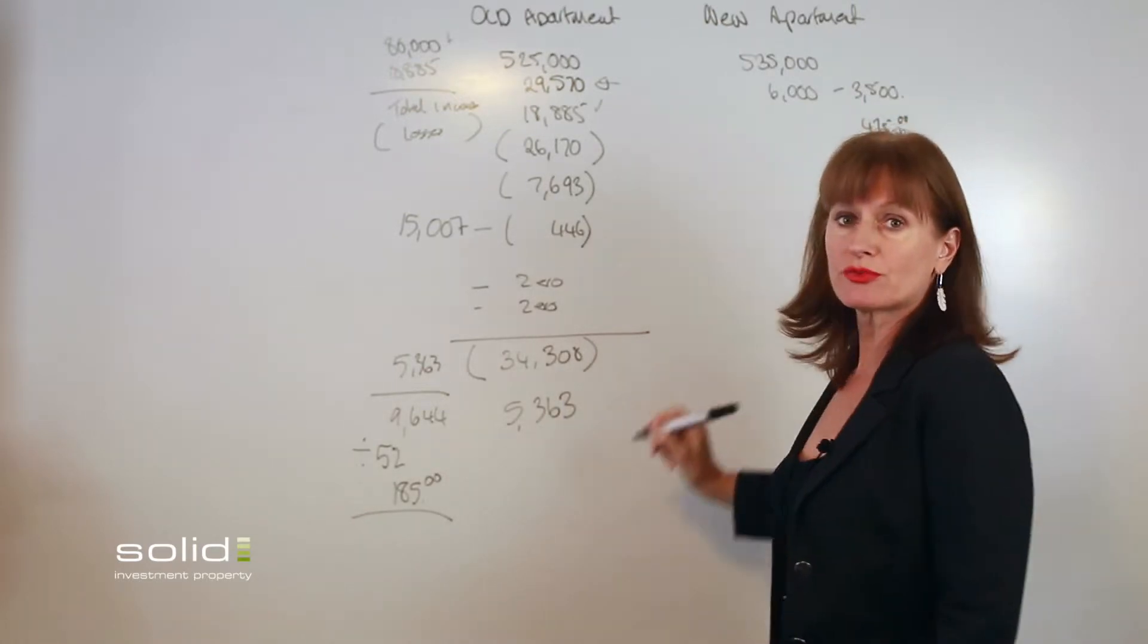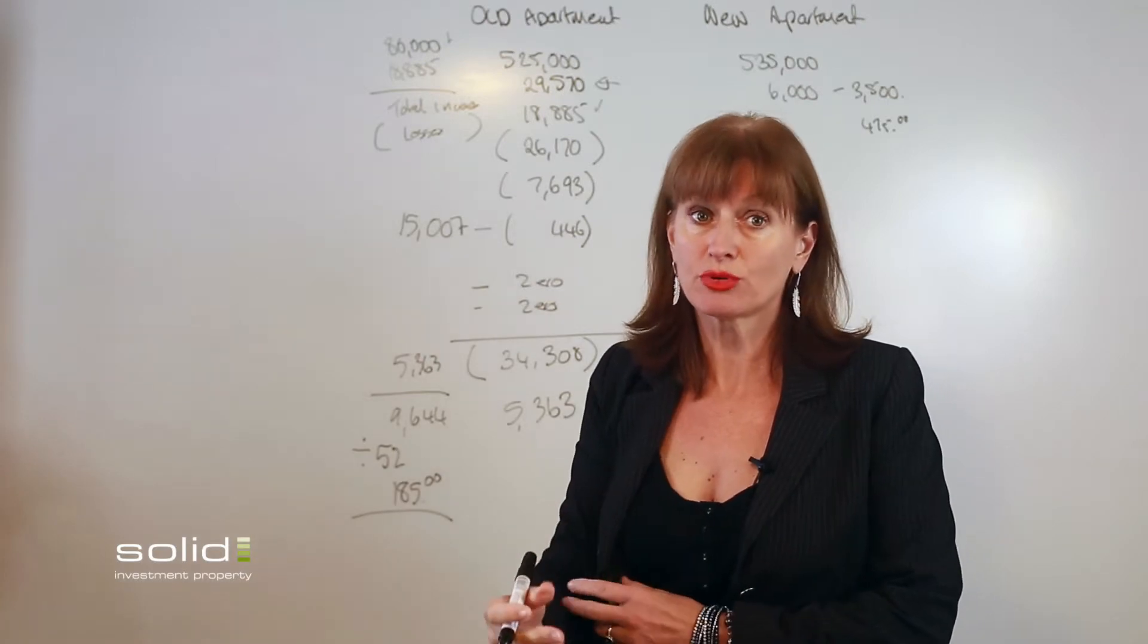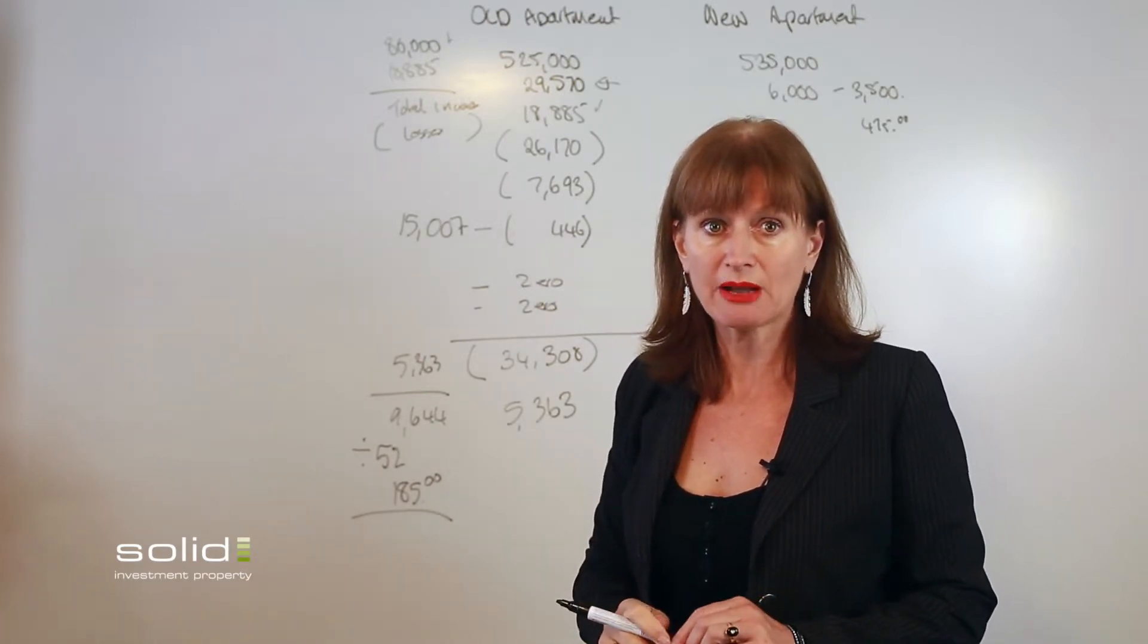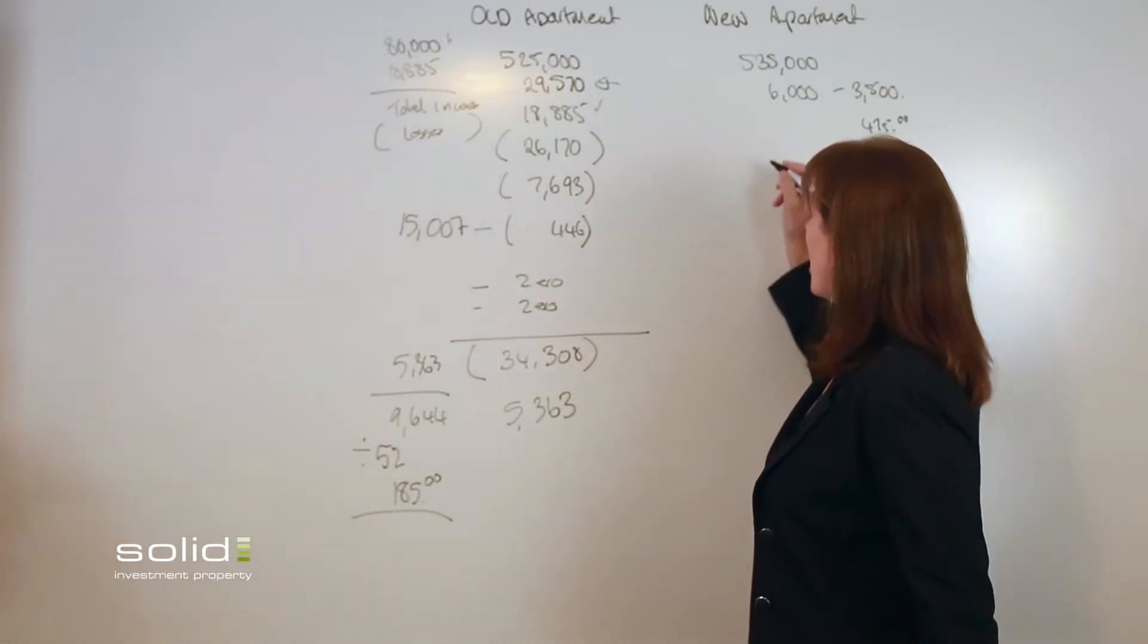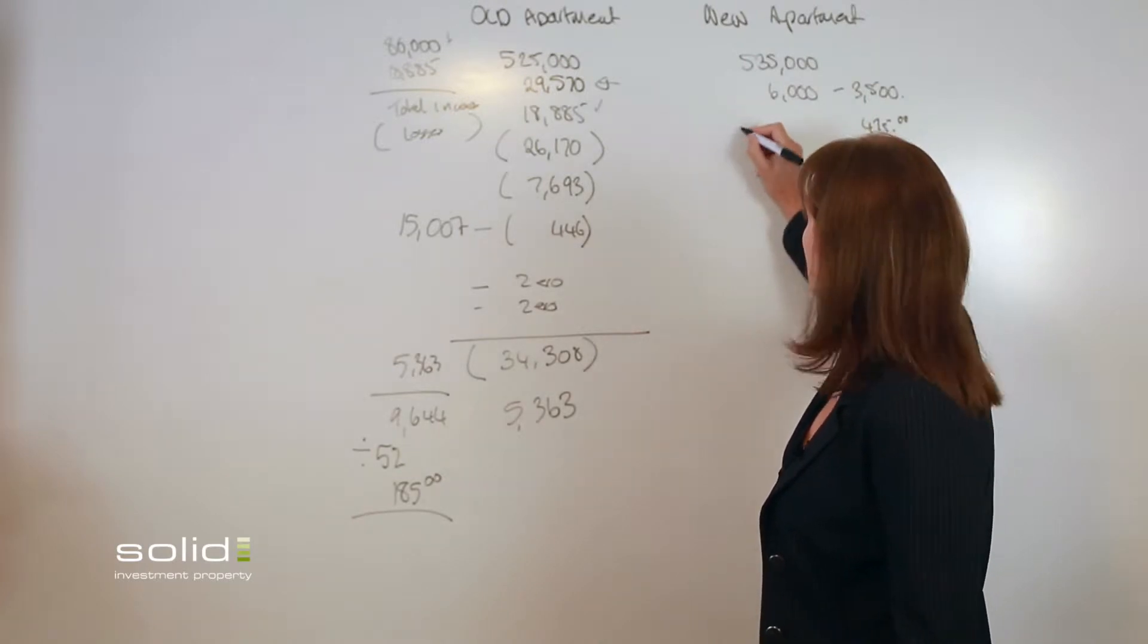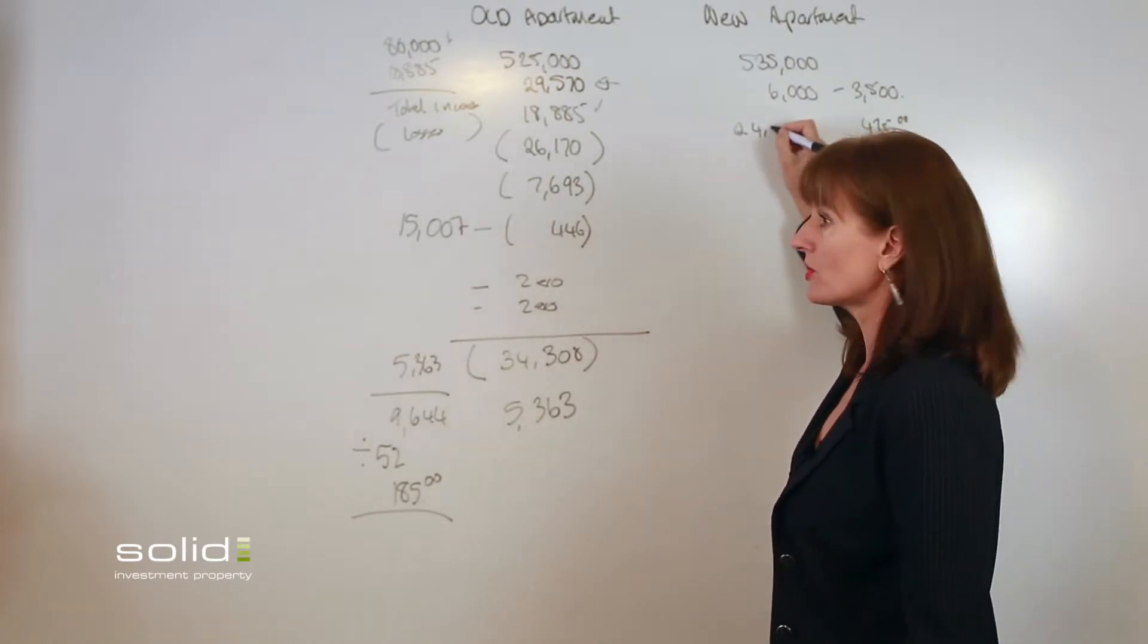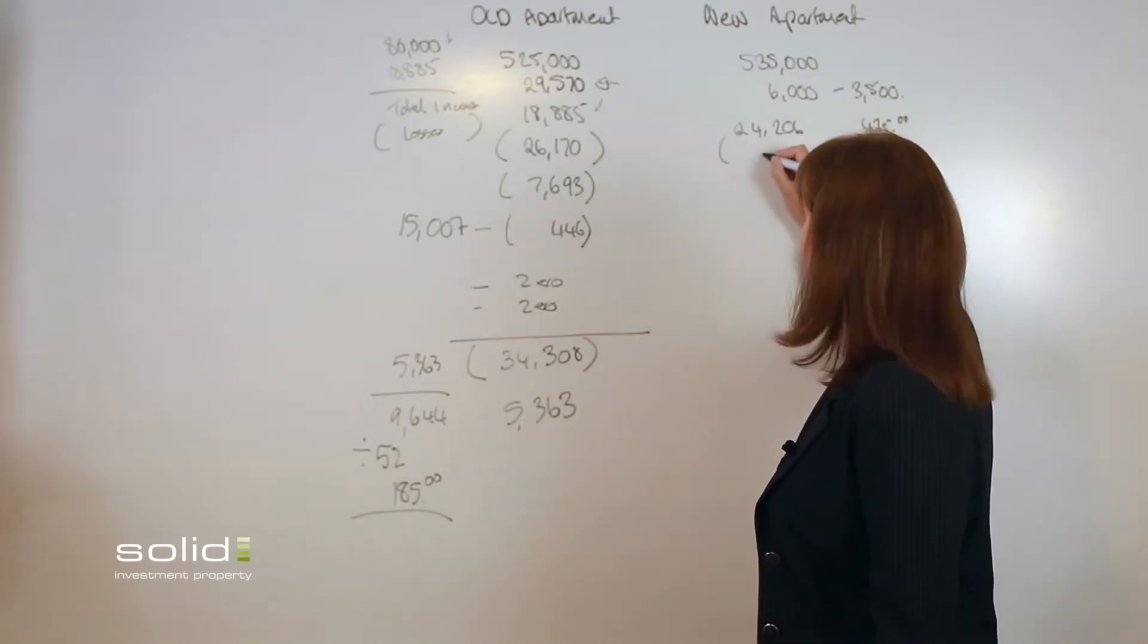So with your income as well, we have been on to realestate.com, looked at the rentals in the area. It's a brand new, beautiful, it's about a 75 square meter two-bedroom apartment right in the heart of the village, so I would say $470 is quite a reasonable figure. So the income there is actually going to be $24,206 compared to $18,000.